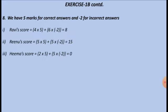Exercise continues with question 8: 5 marks for correct answers and minus 2 for incorrect answers. Ravi got 4 correct and 6 incorrect answers, so his score is 4 into 5 plus 6 into (minus 2) which equals 8. Renu got 5 correct and 5 incorrect answers: 5 into 5 plus 5 into (minus 2) equals 25 minus 10 equals 15. Hema got 2 correct and 5 incorrect answers: 2 into 5 plus 5 into (minus 2) equals 0, which is not good.